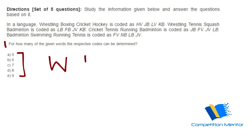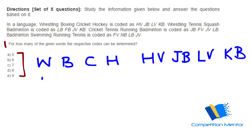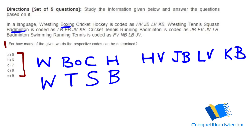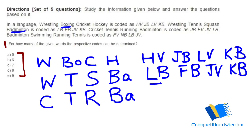So write W, B, C, H — coded as HV, JB, LV, KB. Then you have Wrestling, Tennis, Squash, Badminton. Now in haste a lot of people confuse Boxing and Badminton — both start with B. Write B-O for boxing and B-A-D for badminton. Do not make that mistake, otherwise you will be lost. Then Cricket, Tennis, Running, Badminton — coded as JB, FV, JV, LV.